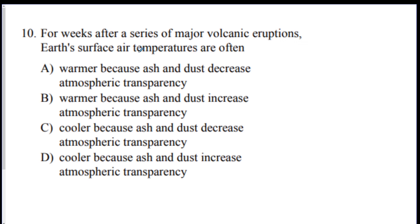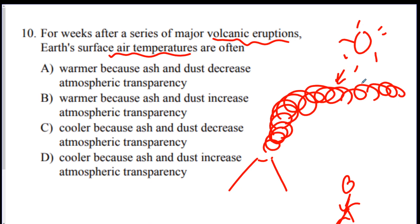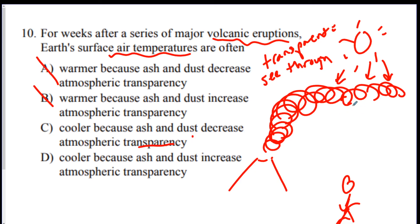Question 10: for weeks after a series of major volcanic eruptions, Earth's air temperatures are often what? Sunlight can't get down to Earth because it's blocked by all the smoke and ash, so temperature goes down — eliminate A and B. The question also asks about transparency: if something is transparent, you can see through it. With all the soot, dirt, and volcanic ash in the way, transparency goes down. It's going to be cooler because the ash and dust decrease the transparency, making it harder to see.